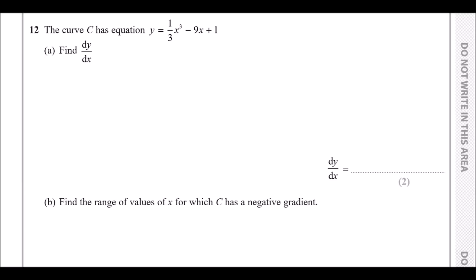Welcome back. We're going to work through number 12 all the way through to 16. The curve C has equation y equals one-third x cubed minus 9x plus 1. Find dy/dx. This is known as the gradient expression — an equation used to represent a gradient — and to find dy/dx you have to differentiate the y expression with respect to x.